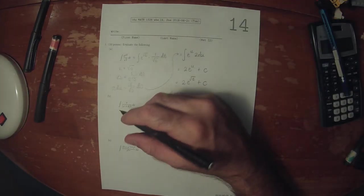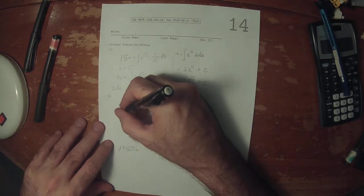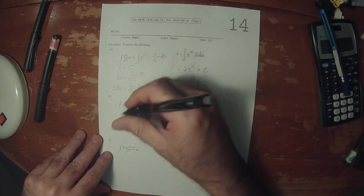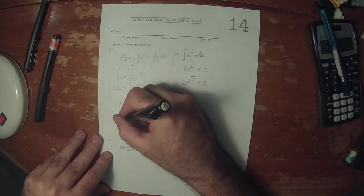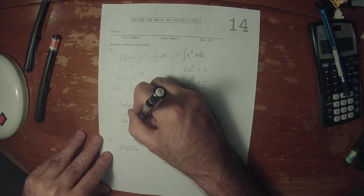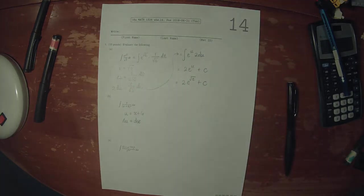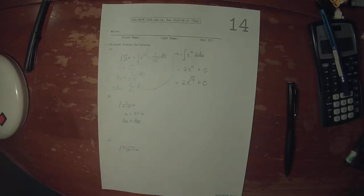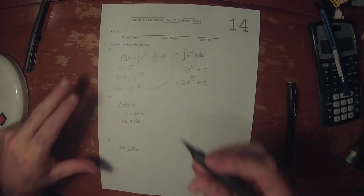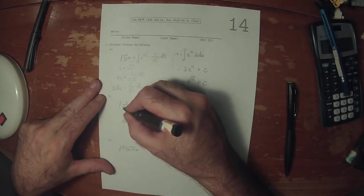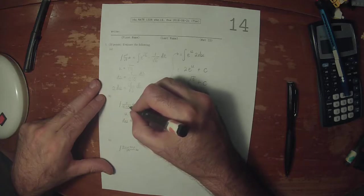The second one requires the substitution u is x plus 6. So du is dx.